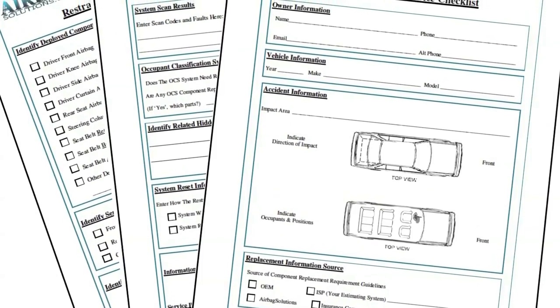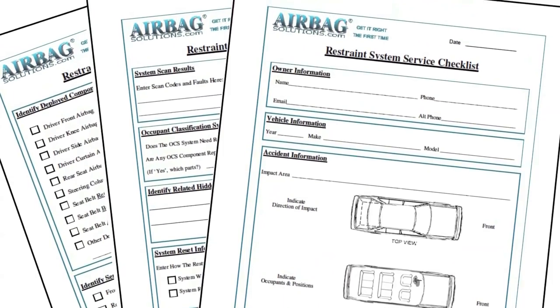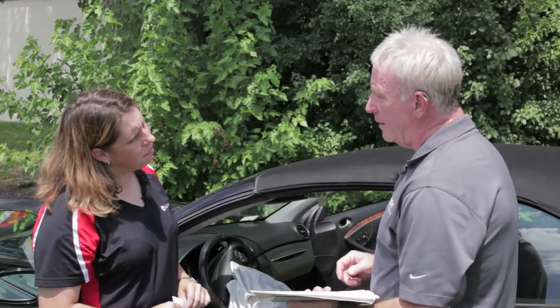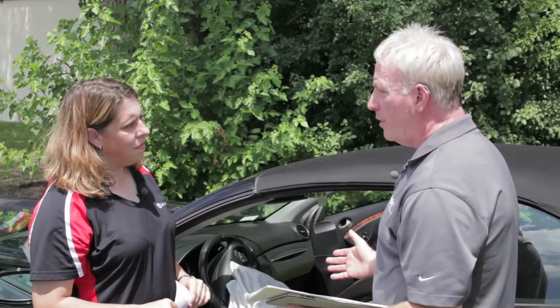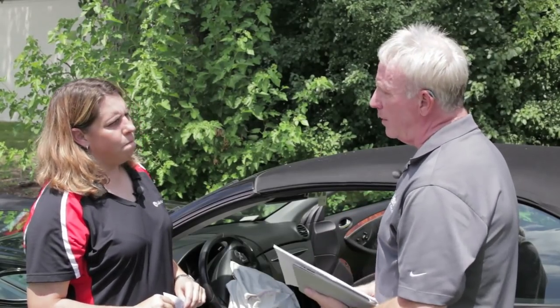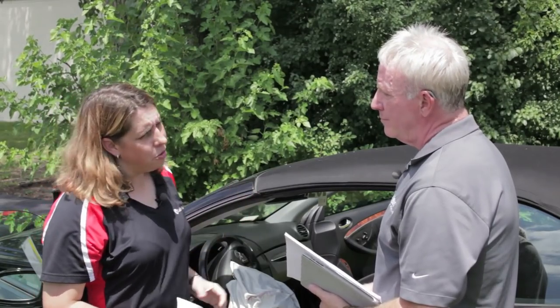We have all the procedures. We've created a brand new checklist for body appraisers — a simple online checklist you can print out or use at your terminal. It helps you determine things like who was sitting in the car at the time of the accident, because many carmakers require seatbelts to be replaced if there was an occupant. Things like a steering column — you can't tell if it's deployed, but the scan tool can. Occupant classification also has to be reset. Toyota, for example, on any vehicle that's been in an accident, requires you to recalibrate the passenger seat for occupant classification. Without knowing what each car requires, you're guaranteeing a supplement.